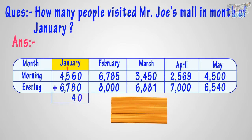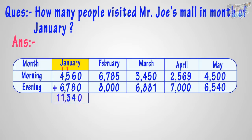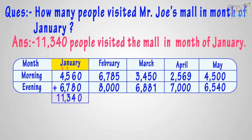Adding 1 plus 5 plus 7, we get 13. So write the 1's place digit, that is 3, in the sum at the hundreds place, and carry over 1 to the thousands place. 1 plus 4 plus 6, we get 11. We don't have to carry over any digit, so write 11 in the sum. We get 11,340. So the answer to the question is 11,340 people visited the mall in the month of January.